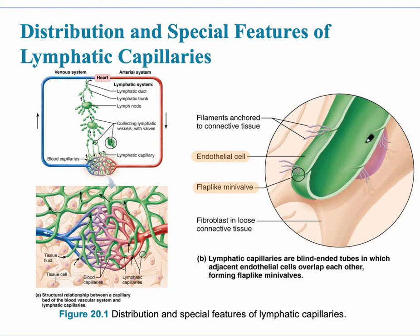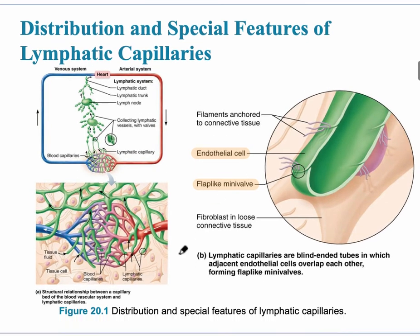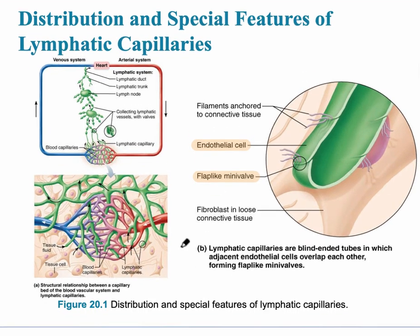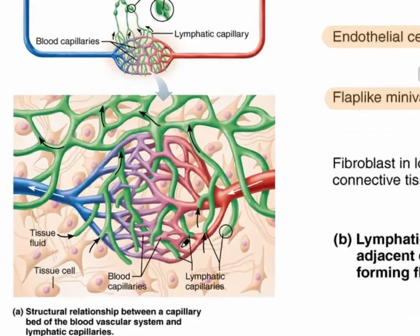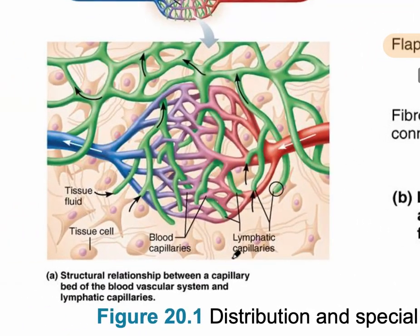Looking at a more zoomed-in view of the lymphatic capillaries — the lymphatic capillaries are found in the tissue bed. We see the blood capillaries here, and the lymphatic capillaries are here.